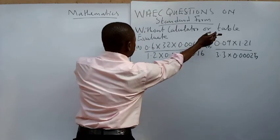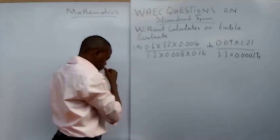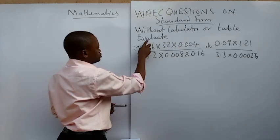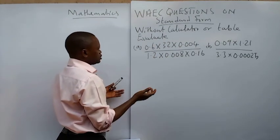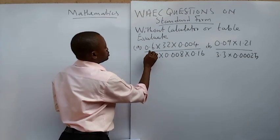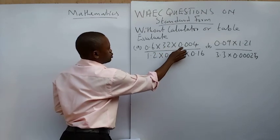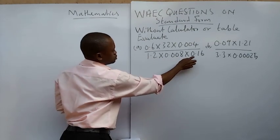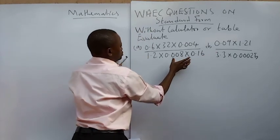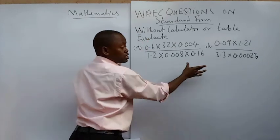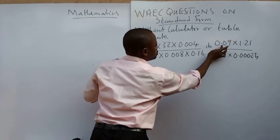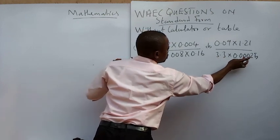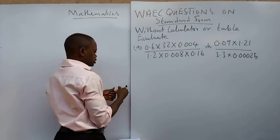So look at this problem. This question says: without calculator or table, evaluate 0.6 times 32 times 0.004, all divided by 1.2 times 0.008 times 0.16. And this one says — this is from one year and this is from another year, both are WAEC exam level questions — 0.09 times 1.21, all over 3.3 times 0.00025. So let's start from this one.